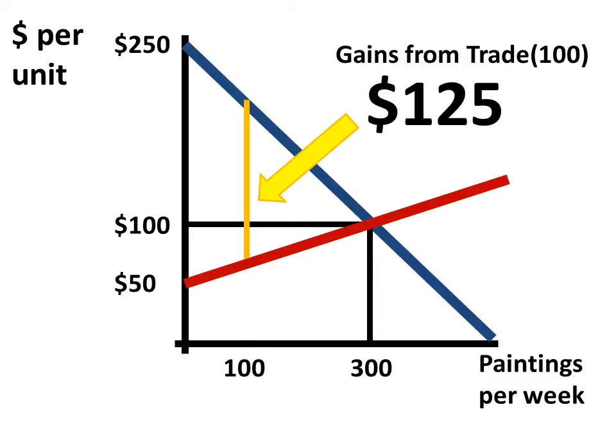So we can think about the gains from trade on that 100th painting would be, in this case, $125, the difference between what somebody was willing to pay, $200, and the cost, $75.